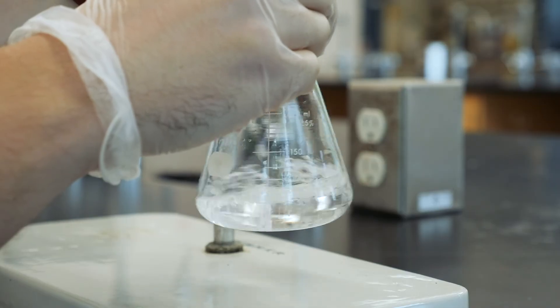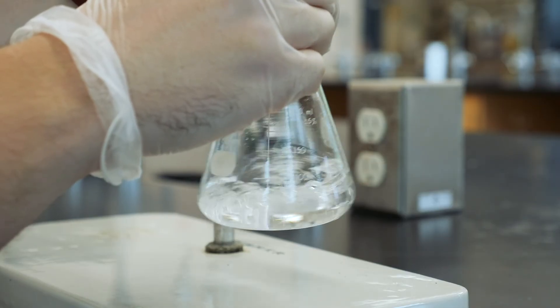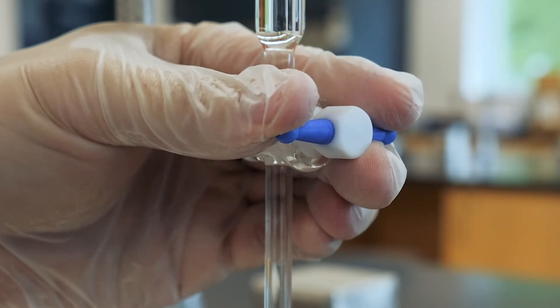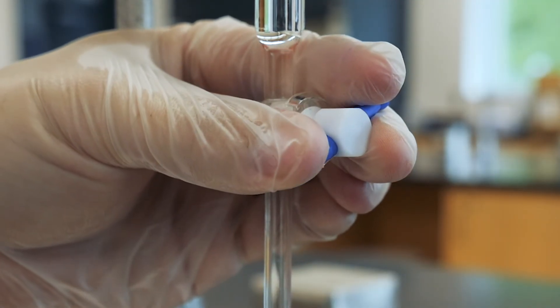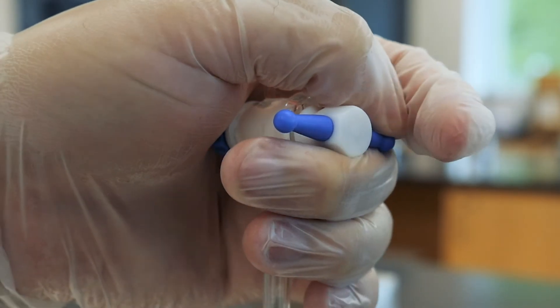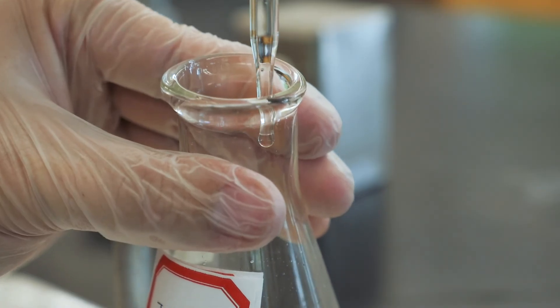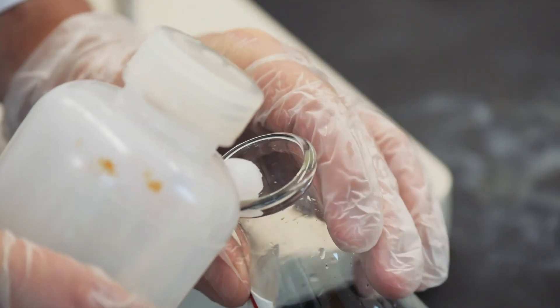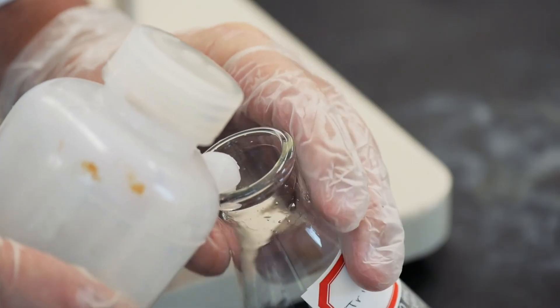Slow additions drop by drop are essential as you approach the endpoint. You'll probably even find it useful to use half drops. In this technique, you slowly open the stopcock to suspend half a drop from the burette, then close the stopcock, gently touch the tip of the burette to the side of the flask, and rinse the sides of the flask to make sure all of the sodium hydroxide gets into the solution.